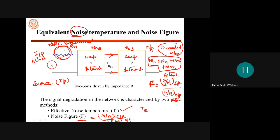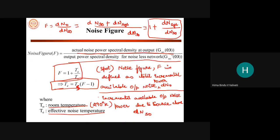Noise figure talks about SNR at input divided by SNR at output. SNR is signal-to-noise ratio. The noise figure F is also given as actual noise power spectral density at output divided by output noise power spectral density for a noiseless network.